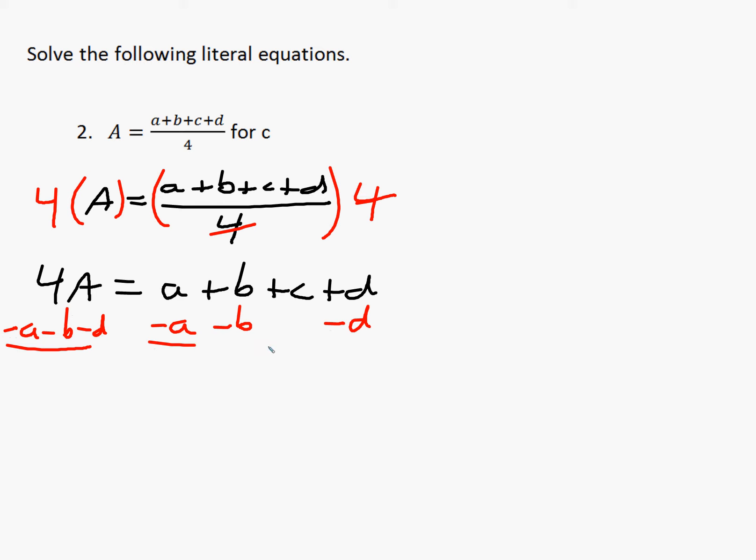On the left side here, there are no like terms, so we'll just leave it as 4A minus lowercase a minus b minus d, and that is equal to c. A lot of times we like to write the c on this side, so c equals 4 capital A minus lowercase a minus b minus d, and that would be solving for c.